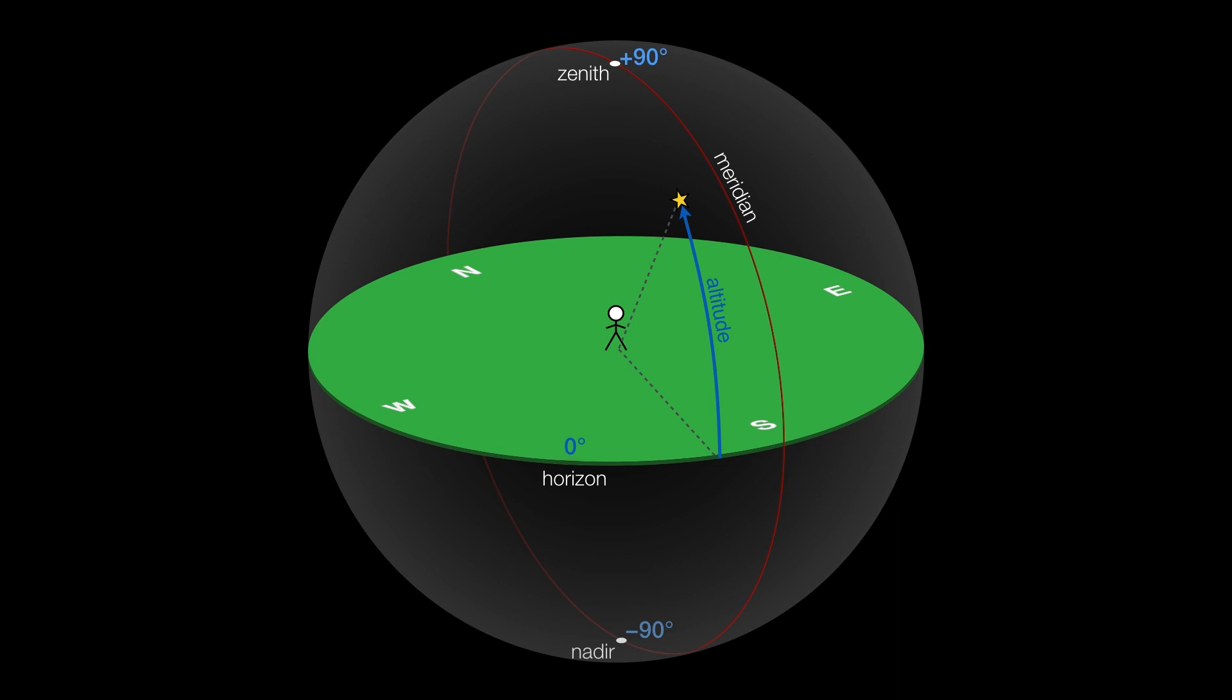To work out where along the horizon we want to look to find this particular star, we start out at due north, and we trace a clockwise angle around the horizon until we arrive directly beneath our star. So this angle is called the star's azimuth, and we can measure that as zero degrees at due north, 90 degrees at due east, 180 at south, and 270 degrees west before reaching zero at due north.